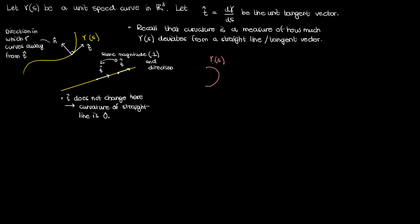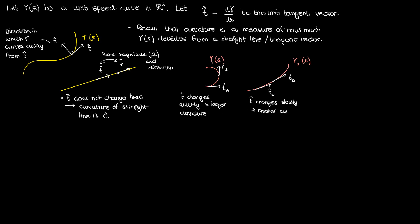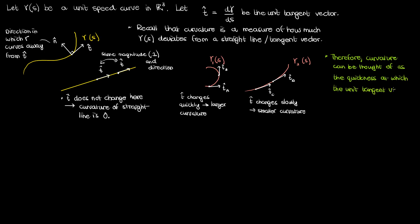If I had a curve where the unit tangent vector changed very quickly in direction, that curve would have a larger curvature. On the other hand, if I had a curve where the unit tangent vector changes very gradually, that curve would have a smaller curvature. Therefore another way to describe the intuition behind curvature is to frame curvature as the quickness at which the unit tangent vector changes direction.